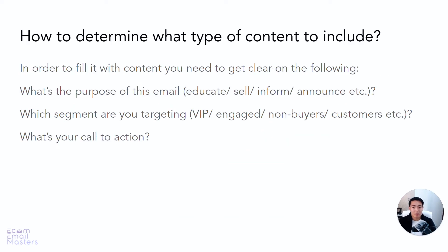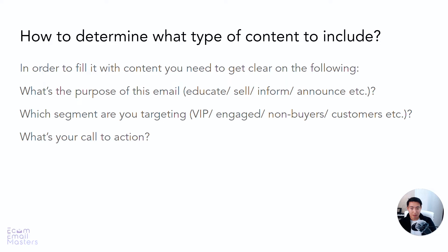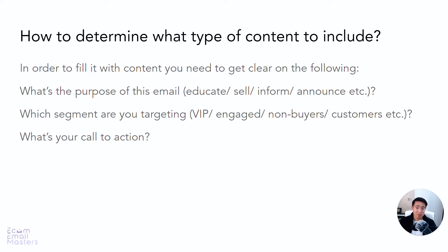Next, you want to determine what type of content to include. The three questions to get clear on are: first, what's the purpose of this email? Are you trying to educate the receiver, sell to them, inform them, or announce something? Without knowing the purpose, it's very hard to populate the email with content. Make sure you have an understanding of the purpose before trying to structure the email.